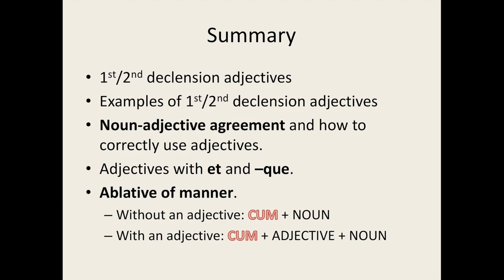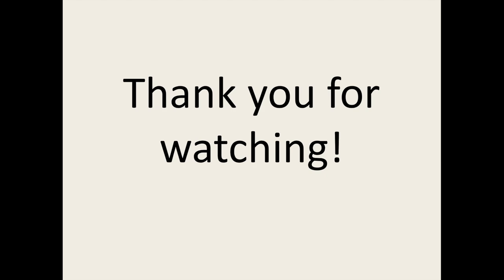So what have we covered this lesson? We have learned about first and second declension adjectives, including how to decline them. I have also introduced the conjunctions et and que, which both mean 'and' but are used slightly differently. Lastly, I touched on the ablative of manner and how to use it with an adjective. Thank you for watching this lesson. I hope you enjoyed it.